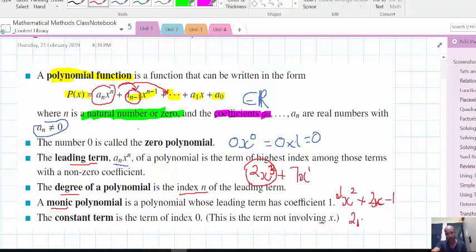This one is not a monic, because it has its leading term with not a coefficient of 1. The constant term is the term on the end.